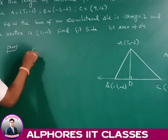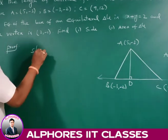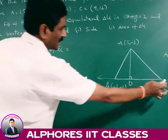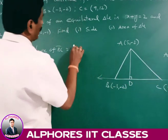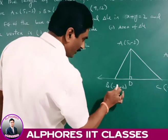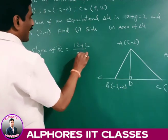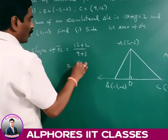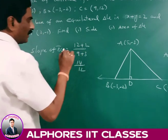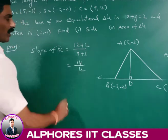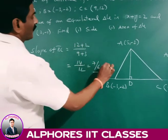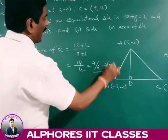First we find the equation of side BC using two-point form or slope-point form. The slope of BC = (Y₂ - Y₁)/(X₂ - X₁) = (12 + 2)/(9 + 3) = 14/12 = 7/6. That is the slope of line BC.